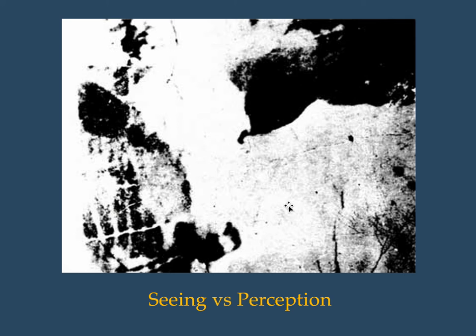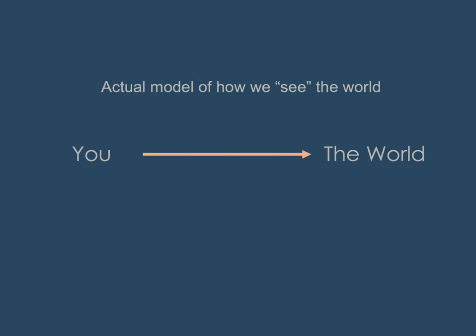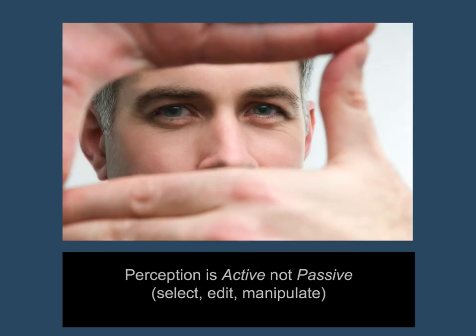We don't necessarily always make sense of raw visual information. Perception is the sense-making where we actually do something with that information and it becomes something. Now that you see the cow, it's pretty hard to unsee it. The brain is working on this information — doing stuff — and it's happening all the time at a level we're not always aware of. This is a much better model for how we actually see the world: we are not passive recipients, we go into the world and do stuff with it. We select, edit, manipulate, and change information.